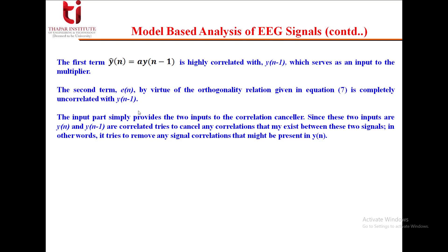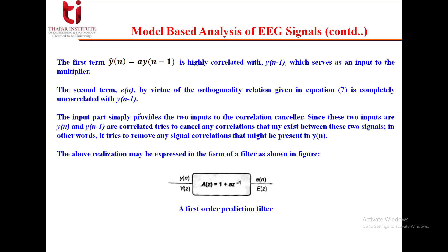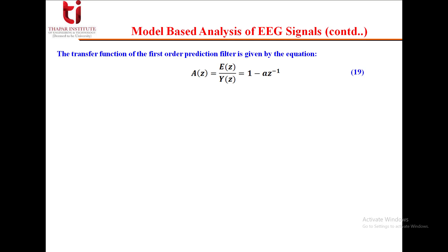The second term e(n), by virtue of the orthogonality relation in equation 7, is completely uncorrelated with y(n-1). The input part provides two inputs to the correlation canceler. Since y(n) and y(n-1) are correlated, the canceler tries to cancel any correlation that may exist between these two signals — in other words, it removes any correlations present in y(n). We can realize this filter using its Z-transform, showing a first-order prediction filter with transfer function 1 - az⁻¹.